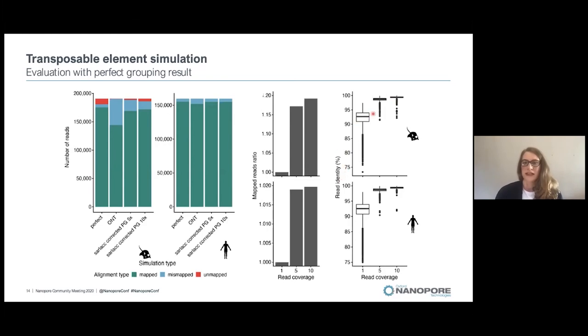Additionally, the read identity goes up to nearly 98, 99% in 10X coverage.